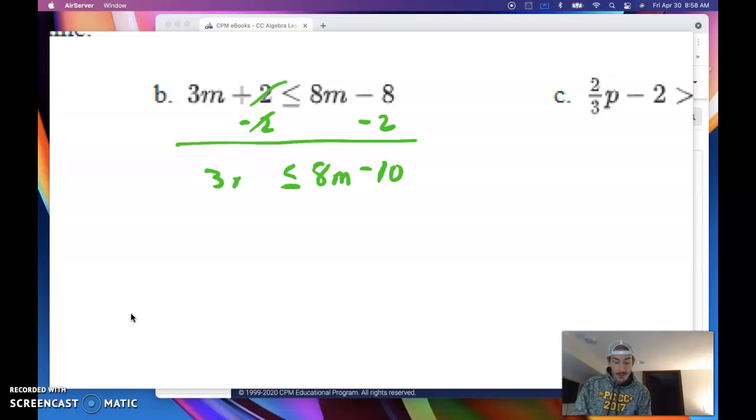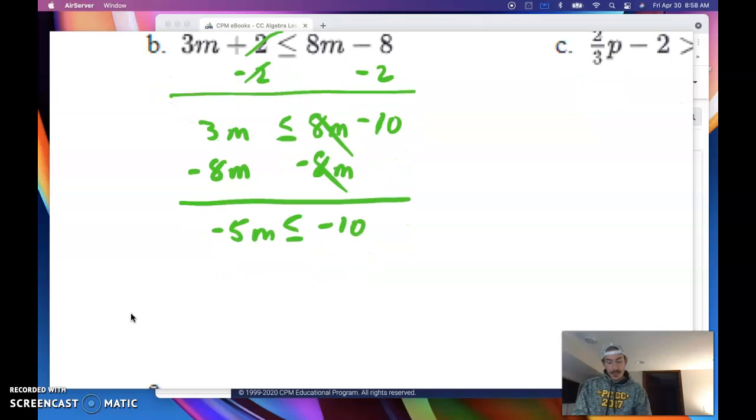I keep that inequality symbol the same because I have not divided by a negative yet. But now I'm going to move that 8m to the left hand side. I will subtract it from here and here. They cancel here. I'm left with negative 10 less than or equal to 3 minus 8 is negative 5m. Now here's that situation where we are going to divide to get the m by itself. But look what I'm dividing by. That division by a negative causes us to need to flip the inequality symbol. The solutions then reveal themselves on the opposite side of that boundary point.